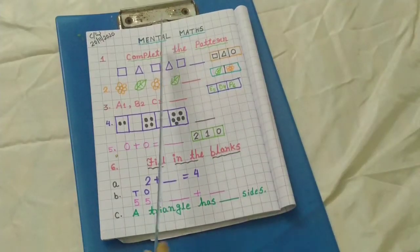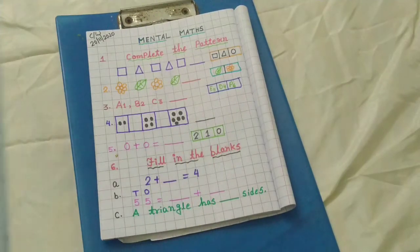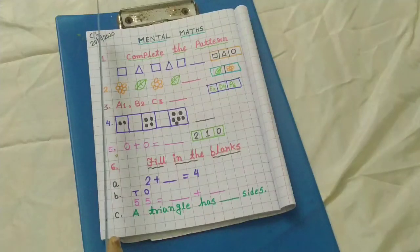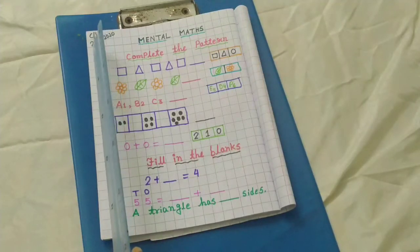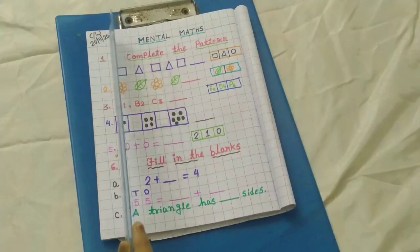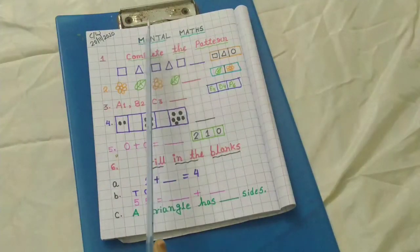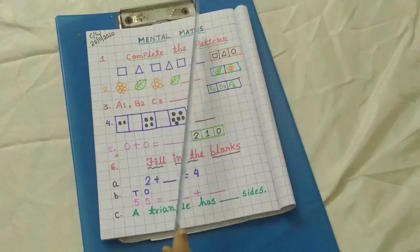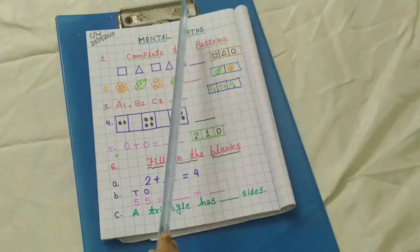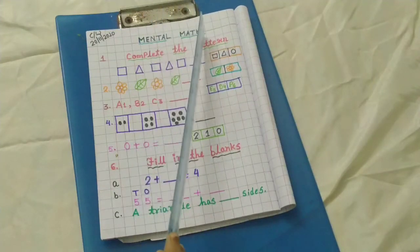Here I am with my math worksheet. First, you have to write CW, which means classwork. Then put the date 20-11-2020. And here I have written mental maths: M-E-N-T-A-L mental, M-A-T-H-S maths.